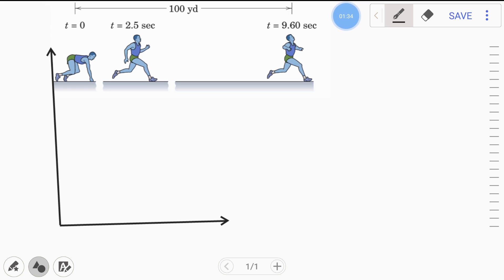Now let's see, this is time in seconds and this is velocity in yards per second. At zero, at point 2.5, and then at the point of 9.6 seconds.